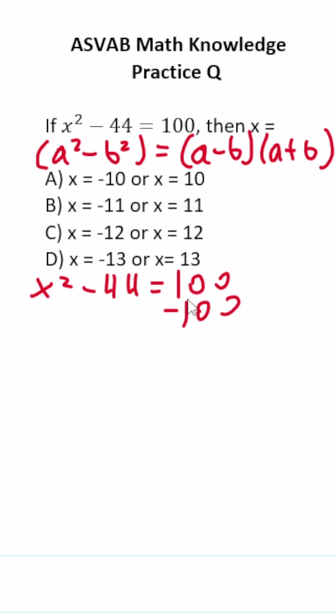If we move 100 over here via subtraction, this crosses out, leaving you a zero on this side. This becomes x squared minus 144 equals zero. I could rewrite this as x squared minus 12 squared equals zero. So we do have our two perfect squares, so we can write it like this.